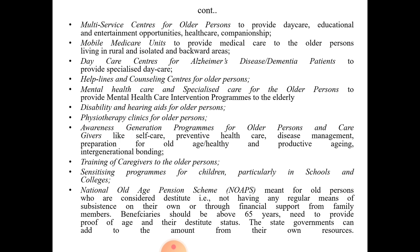The last program is the National Old Age Pension Scheme (NOAPS), meant for older persons who are considered destitute — that is, not having any regular means of subsistence on their own or through financial support from family members. Beneficiaries should be 65 years of age, need to provide proof of age and destitute status, and state governments can add to the amount from their own resources.